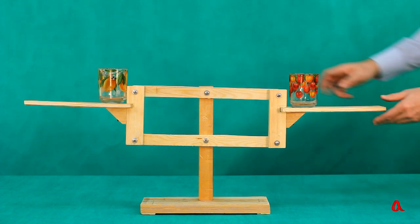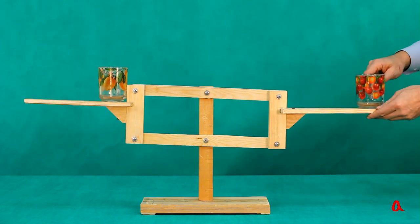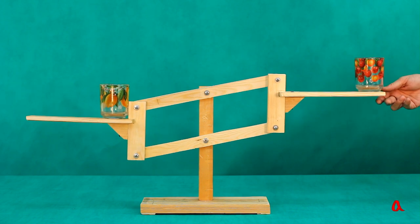Now let us move one of the loads to the edge of the platform. The equilibrium is not upset, in spite of the fact that the shoulder of the load has practically doubled. Can it be that the lever rule doesn't work anymore?